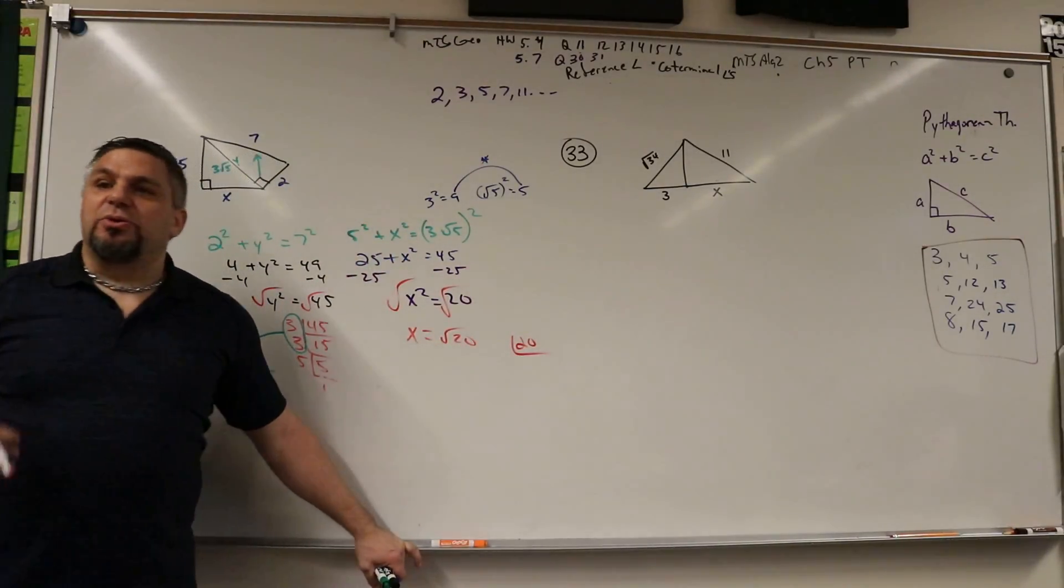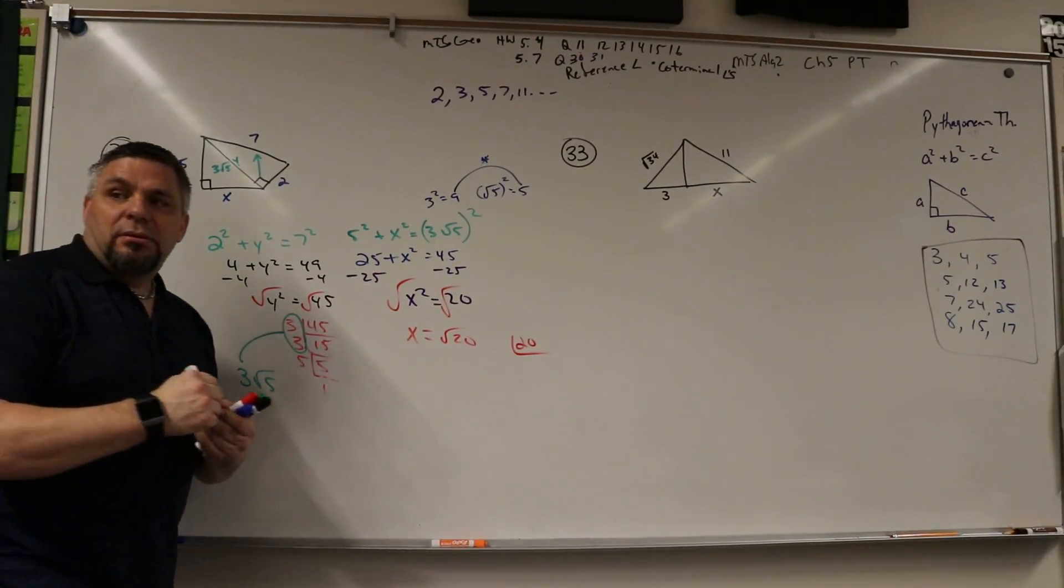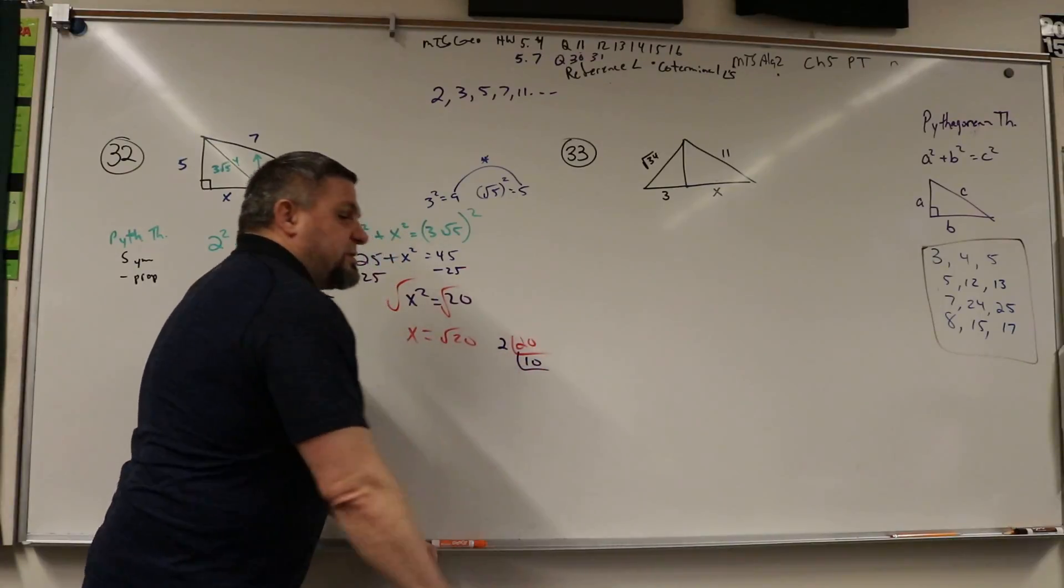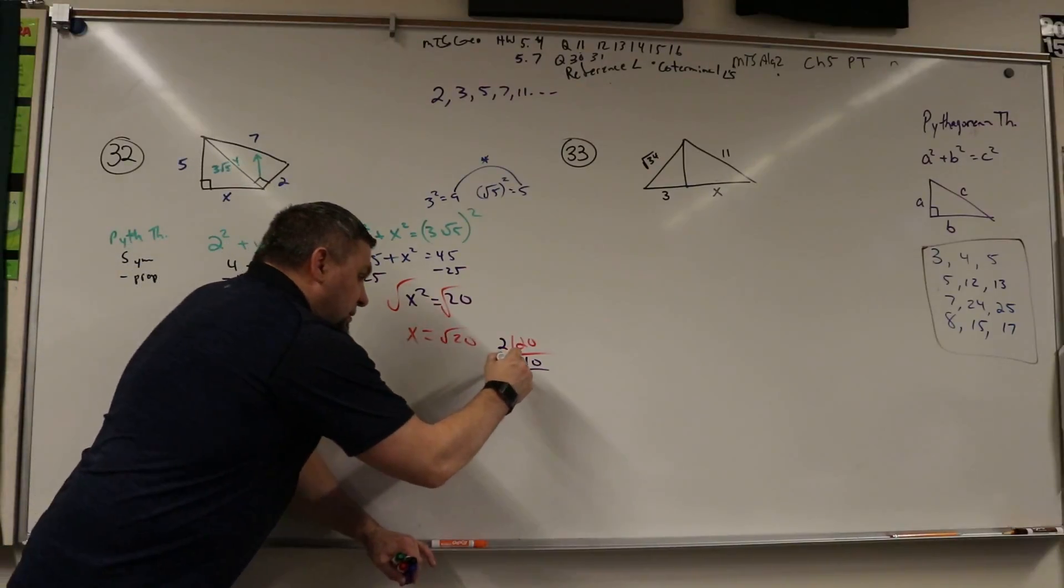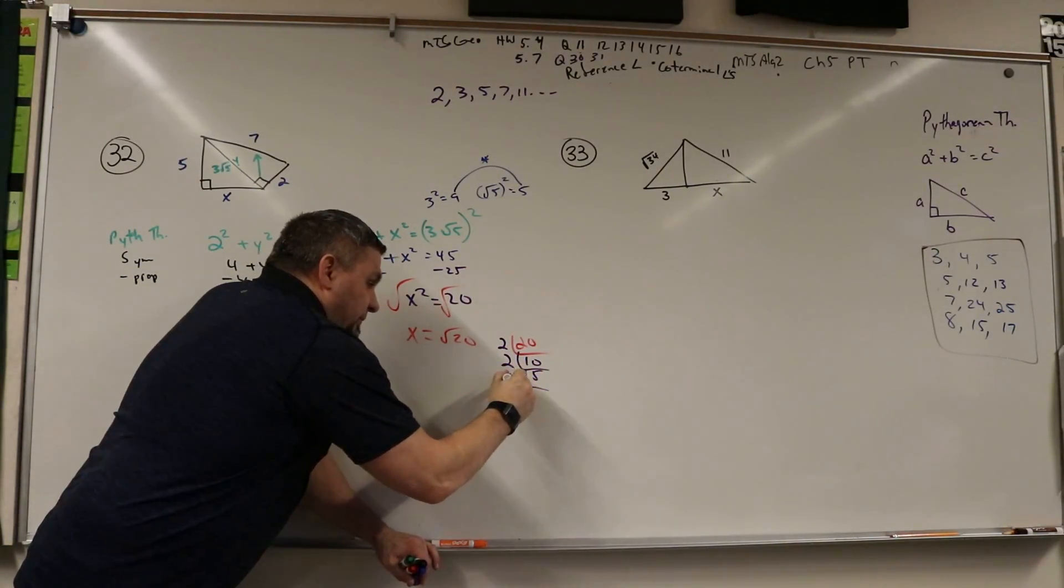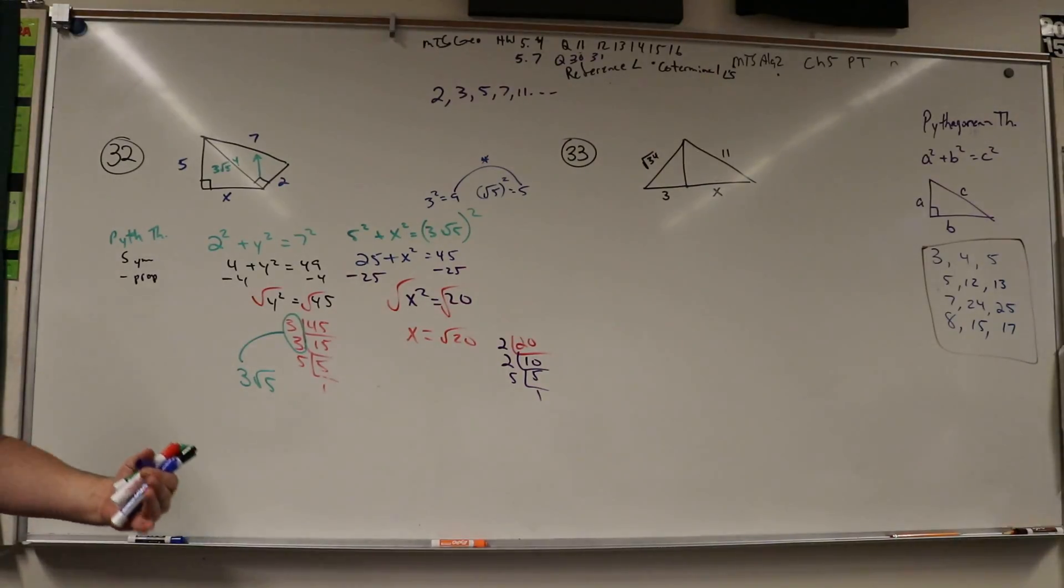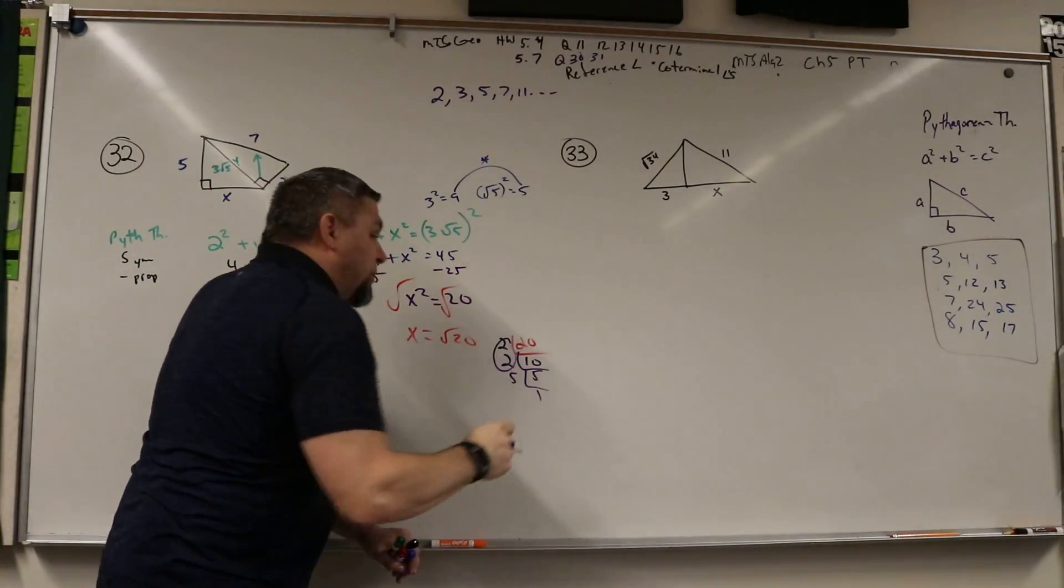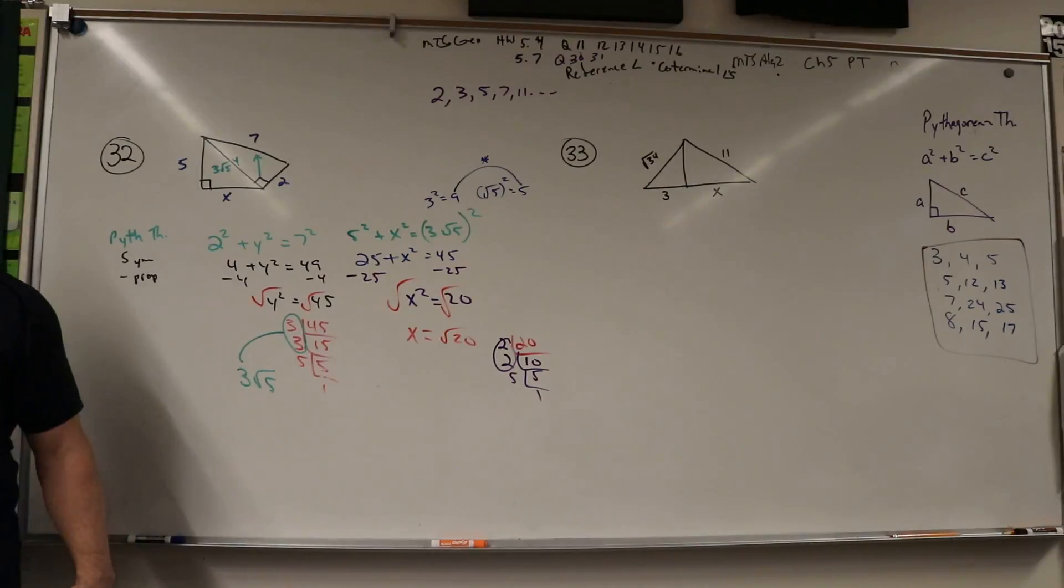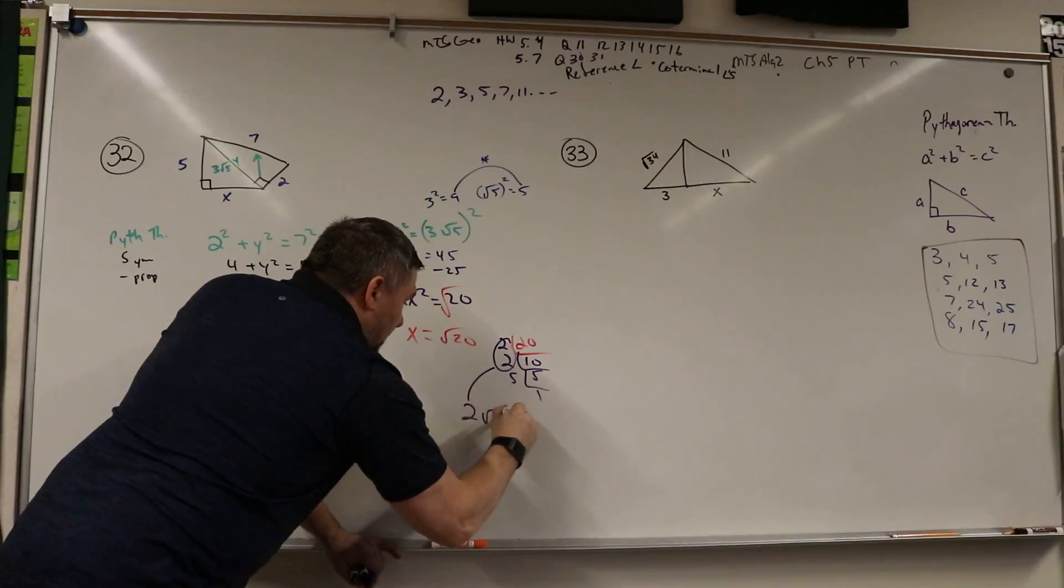What goes into 20? Does 2 go into 20? Yeah, how many times? 2 goes into 10 five times, and 5 goes into 5 once. Is there a pair? Yes, of what? The twos. There we go. See, now he knows where he's seeing it. Now he knows where to look. Once you know where you're looking, it's not that hard. So it's 2√5.